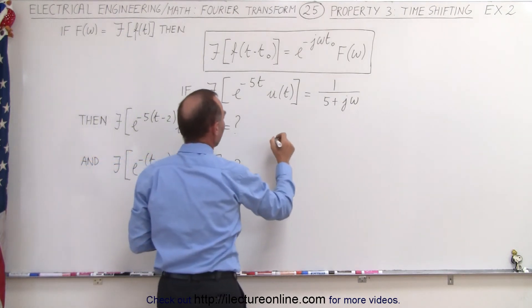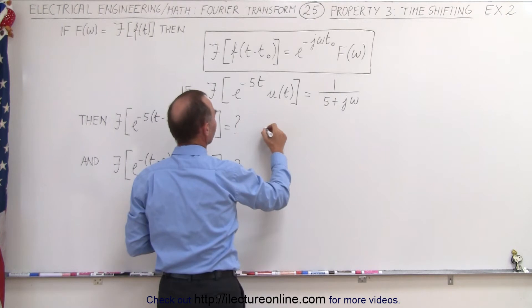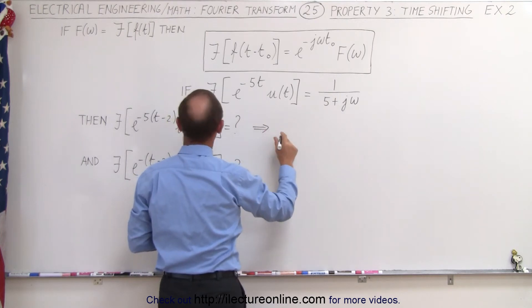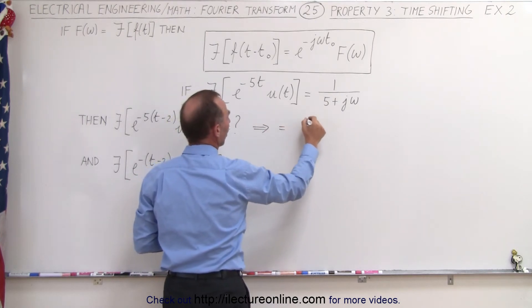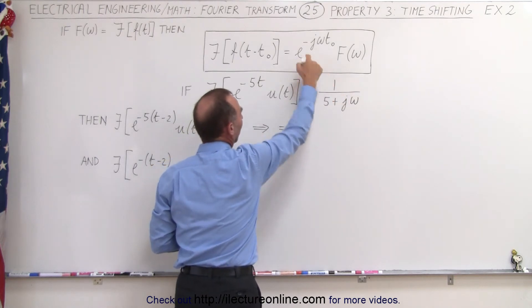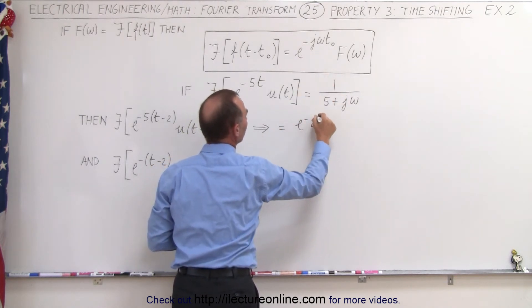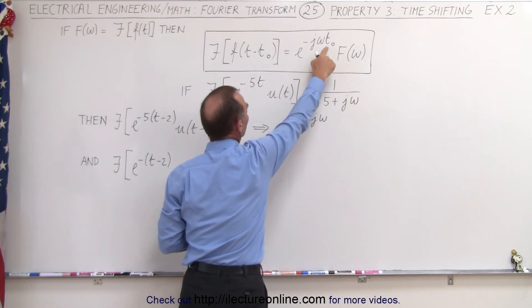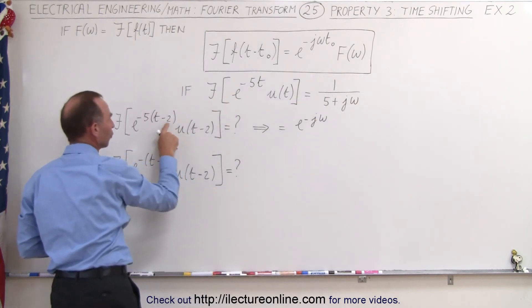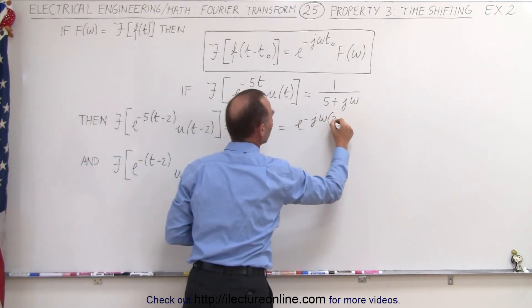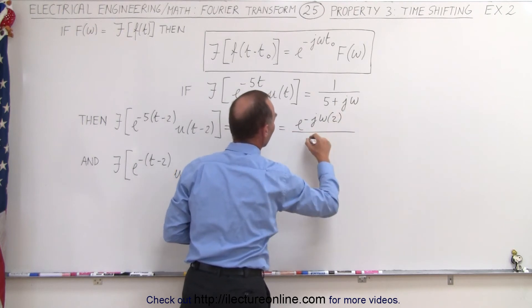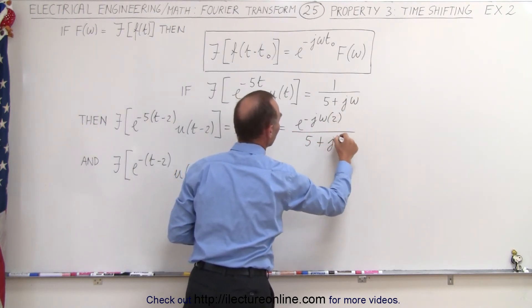That means that now the Fourier transform is going to look as follows. It's going to be equal to, instead of writing a 1, we're going to write e to the minus jω, and the shift t is a shift of 2. So we put in the 2 here, and then we divide that by what we have left, 5 plus jω.